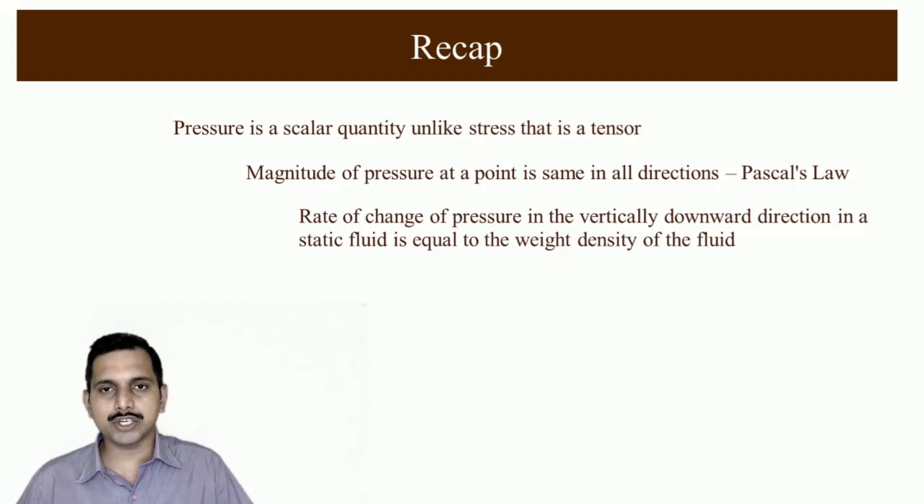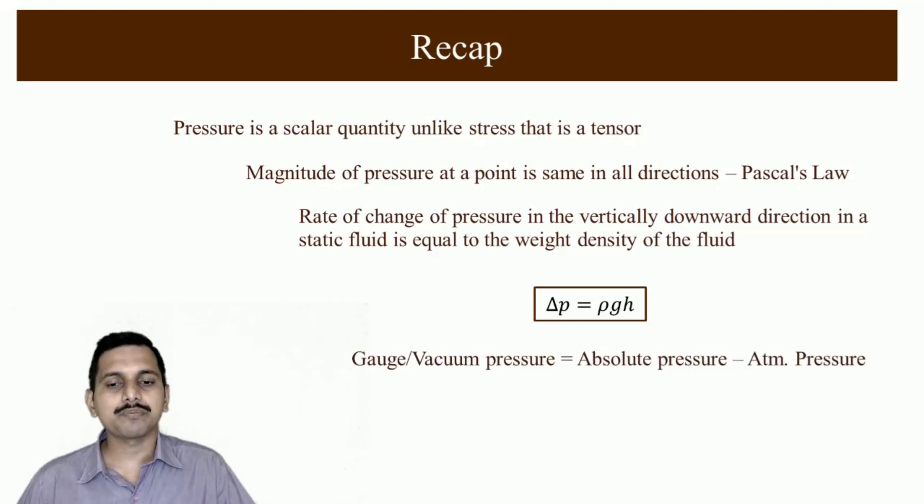Also there is no variation of pressure in the horizontal direction in a static fluid, that is very important. Delta P is equal to rho g h, h is the height vertically downwards. Gauge pressure or vacuum pressure is equal to absolute pressure minus atmospheric pressure. It is gauge pressure if absolute pressure is more than atmospheric pressure, vacuum pressure otherwise.